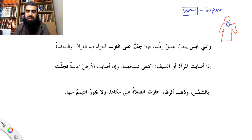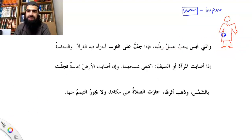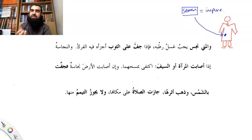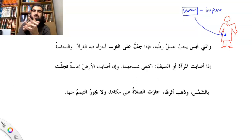Is he allowed to pray salat with semen on his clothes? No — he has to clean it. That cleaning is necessary because semen is considered to be impure. So as it says: wal-maniyu najisun yajibu ghaslu ratbihi — when it's moist, you have to wash it. That's how you clean it when it's moist, because it's got into the fabric, into the gaps. Washing makes it come out.